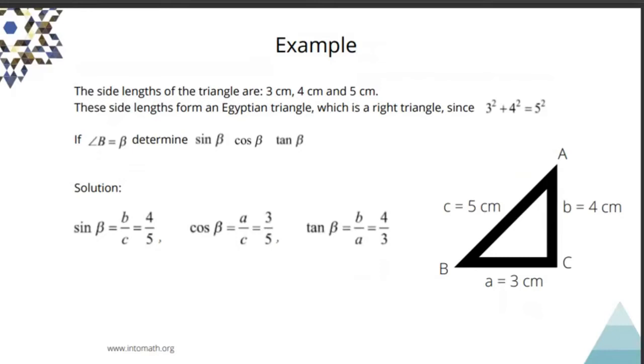If angle B is beta, determine sine beta, cosine beta and tangent beta. We have to use the ratios. So, sine of the angle is b over c, opposite over hypotenuse, which is 4 over 5. So, the ratio representing the sine of the angle B or beta is 4 over 5. Cosine beta is 3 over 5 and tangent beta is 4 over 3.